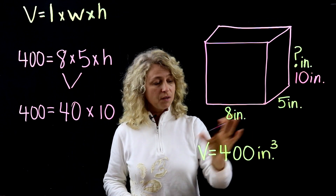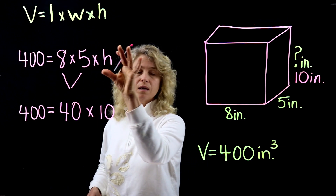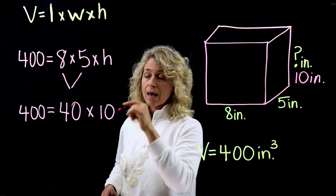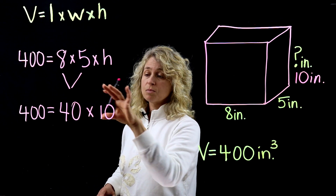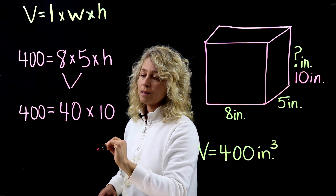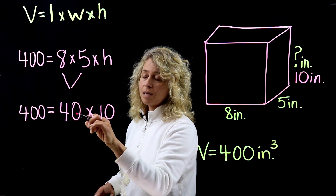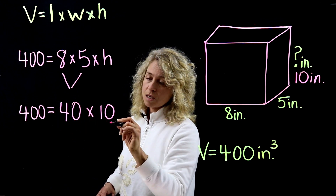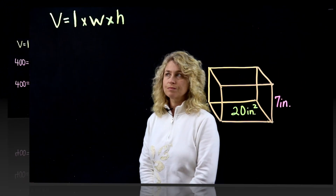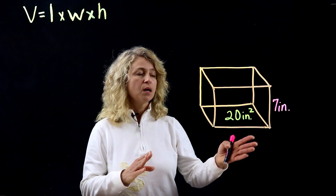So if you're given a volume, fill in your known values and figure out what to multiply to reach that volume. Another method: 400 divided by 40 equals 10, and you find the missing value that way.